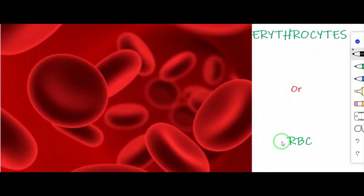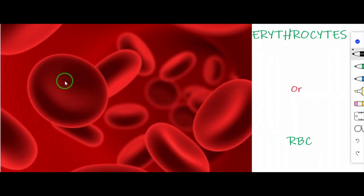Erythrocytes, or RBCs, are the most abundant cells in the human body. These RBCs are formed in the bone marrow. The shape of the RBC is biconcave and disc shaped. The lifespan is 120 days. The function of RBC is transport of oxygen from lungs to tissues. RBCs impart red color to the blood due to the presence of the respiratory pigment hemoglobin. Matured mammalian RBCs do not have cell organelles and nucleus.